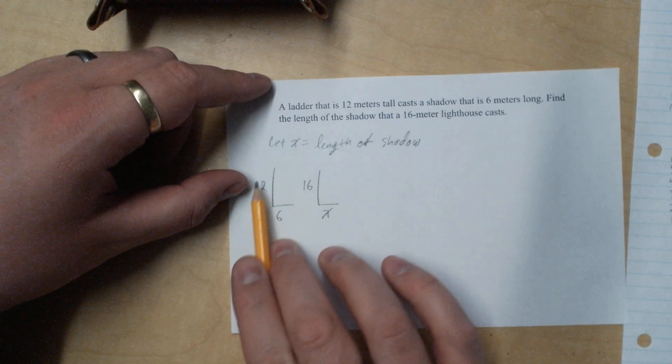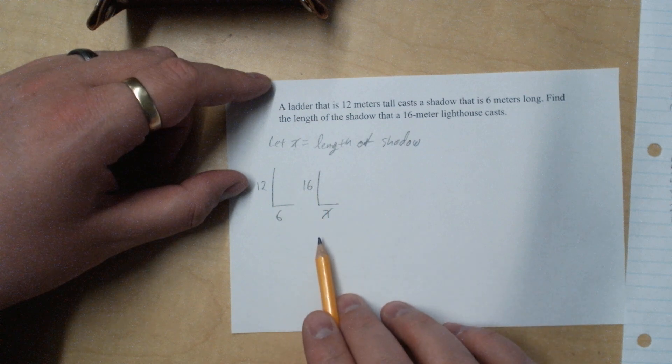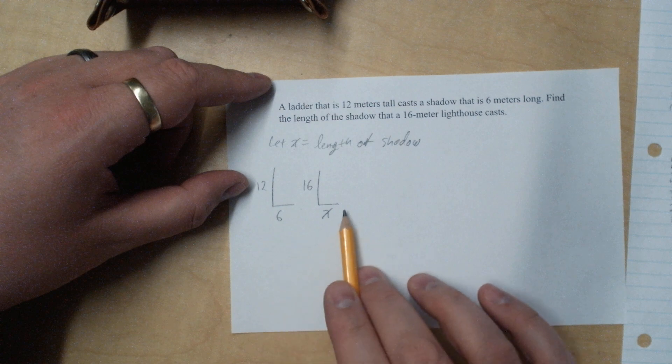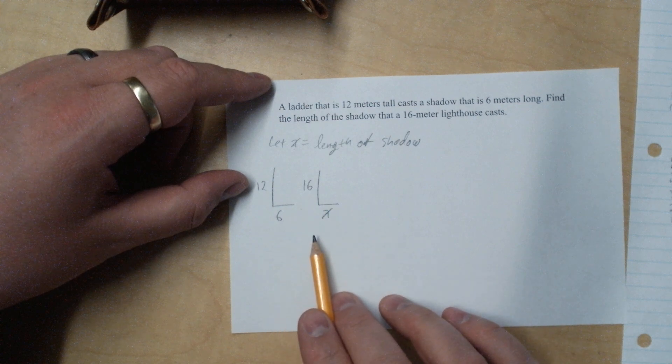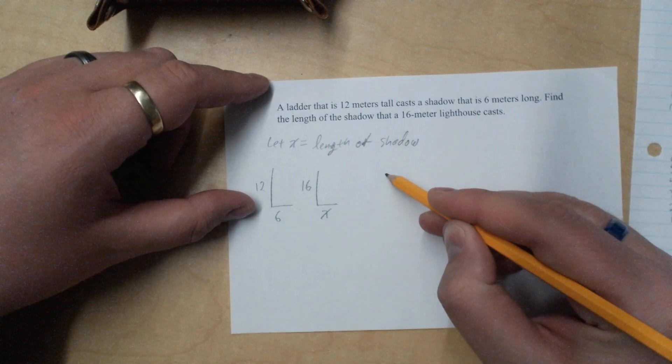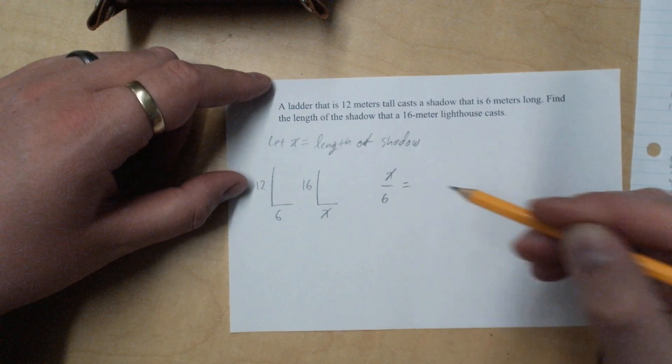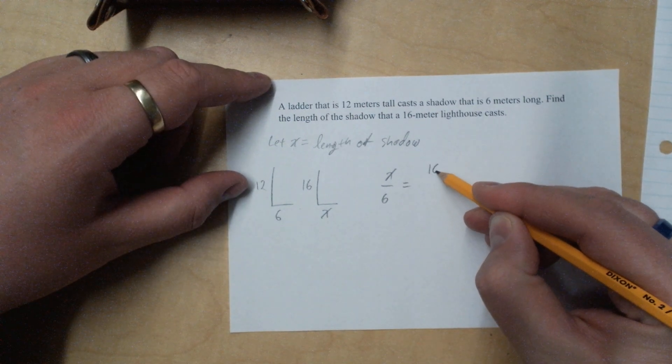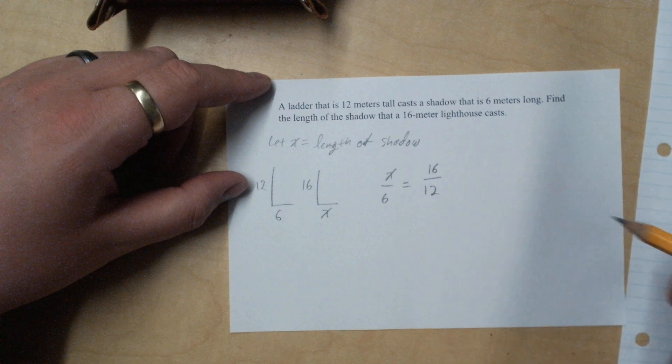Now, because of right angles and rays of light, we can use the triangle similarity properties from geometry. And we can get x divided by 6 is going to be equal to 16 divided by 12.